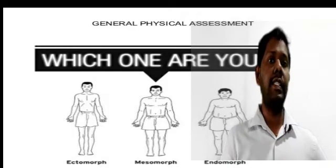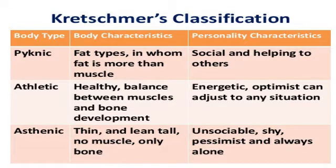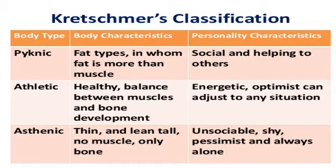Coming to the next classification, given by Kretschmer. According to him there are various classifications: asthenic, sthenic, hyposthenic, pyknic, and finally cachectic. Cachectic refers to malnourished persons who will be having a low muscular mass.